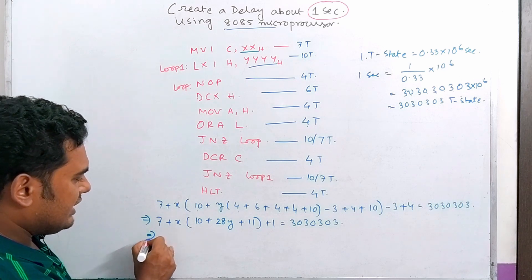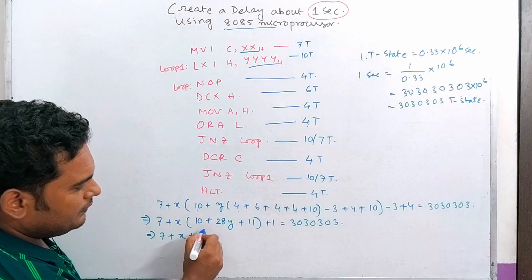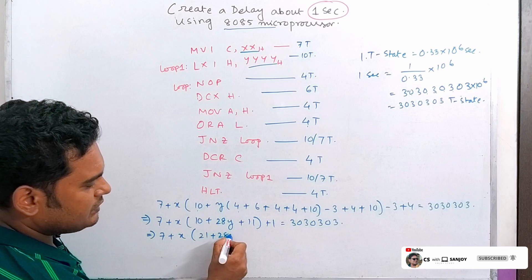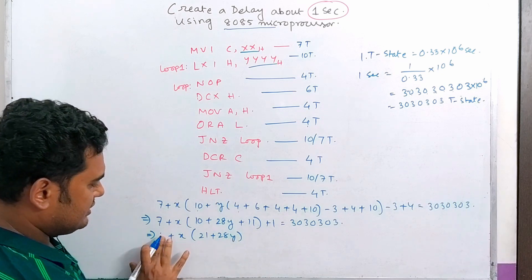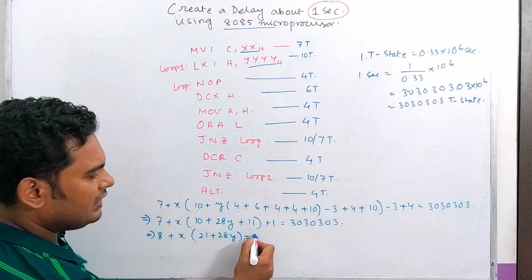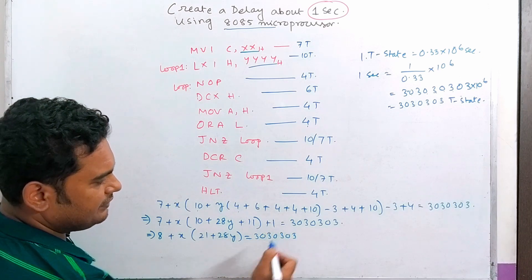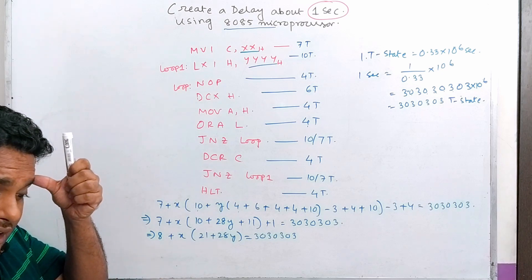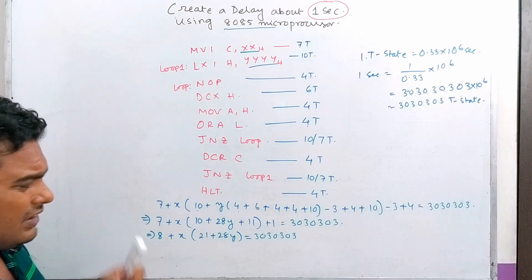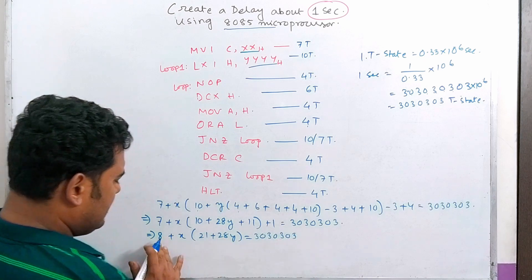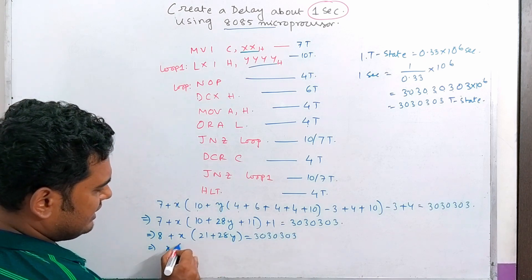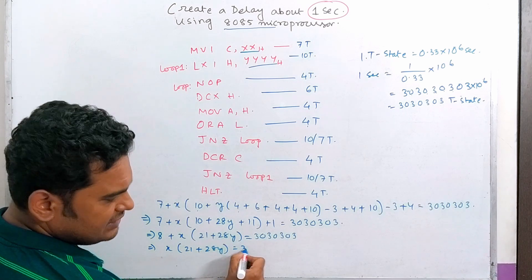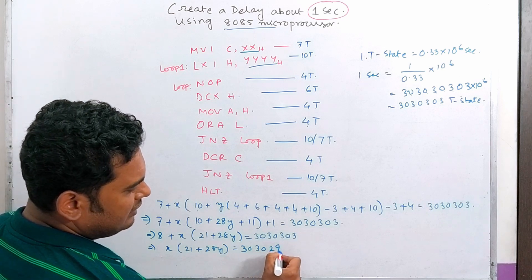So the equation becomes: 7 + (X × 21) + (28 × Y) = 3,030,303. Simplifying: X × 21 + 28Y equals 3,030,295. We have two unknowns, X and Y, so we assume a value for one of them to solve the equation.